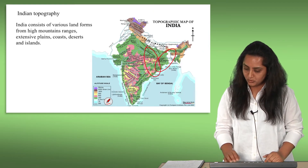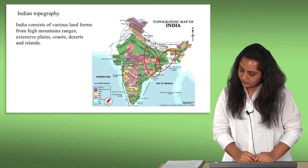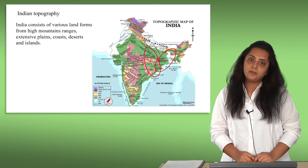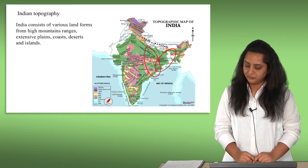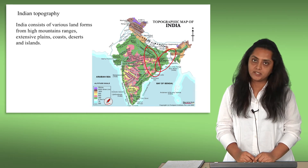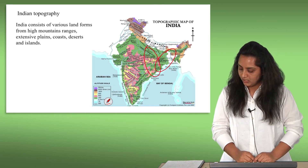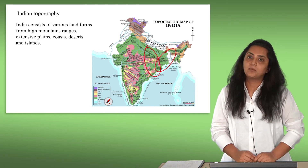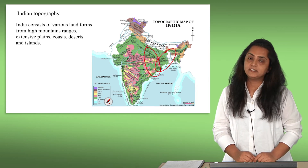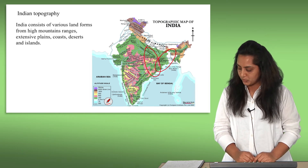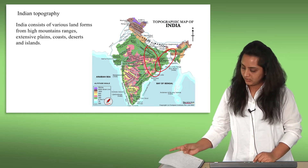When it comes to rivers, mountains are the primary source of rivers, which derive their flow from rainfall, snow, and glacier melts. India occupies nearly 2.42% of the land of the entire Earth.